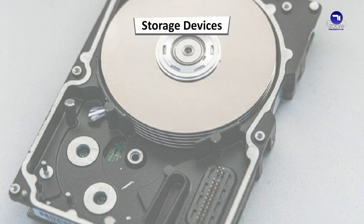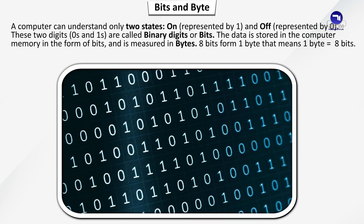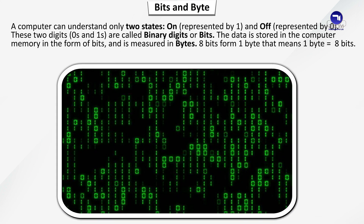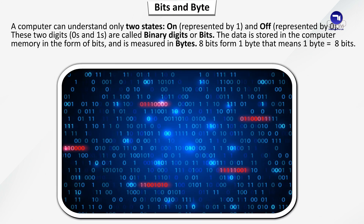Storage Devices are used to store information in the form of data. These devices are also called memory. A computer can understand only two states: ON and OFF. These two digits, zeros and ones, are called binary digits or bits. The data is stored in computer memory in the form of bits and is measured in bytes. 8 bits form 1 byte, meaning 1 byte is equal to 8 bits.